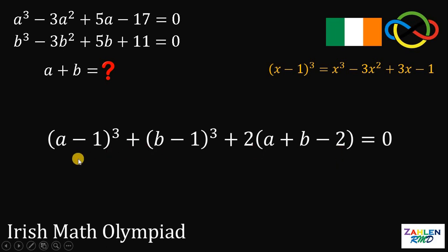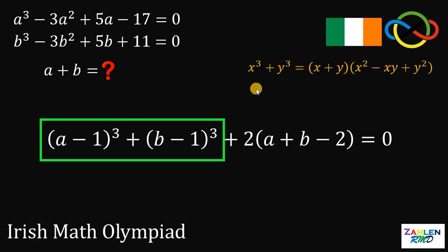Now, let's focus on these two terms. A minus 1 cubed plus B minus 1 cubed. Notice that this is the sum of two cubes. Therefore, we can use this identity. X cubed plus Y cubed is equivalent to X plus Y multiplied by X squared minus XY plus Y squared. Wherein, this X represents A minus 1 and this Y represents B minus 1.